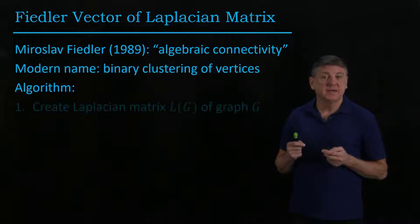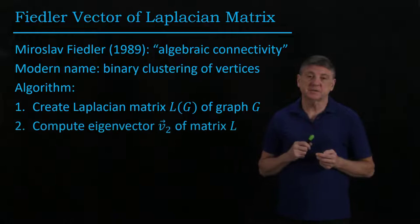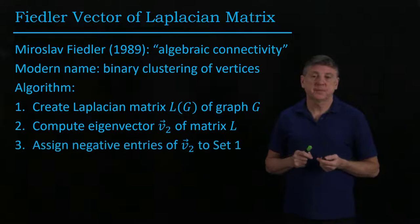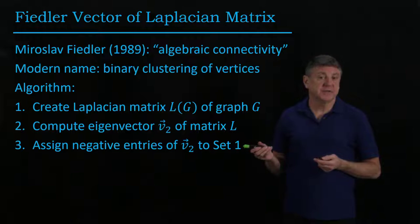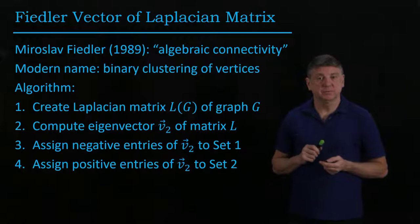The algorithm is: we take a graph and from that graph create the Laplacian matrix L(G). We compute the second eigenvector v̄₂. We know the first eigenvector is all ones. We take the negative entries of this second eigenvector and assign those to set number one, and we take the other entries and assign them to set number two.